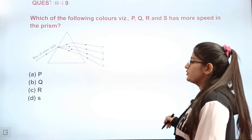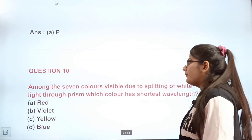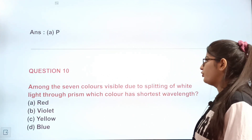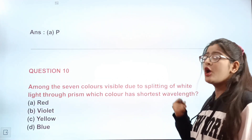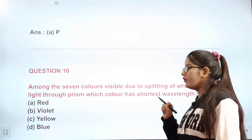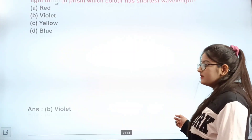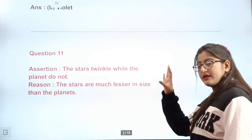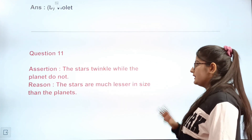Question 10: Among the 7 colors visible due to splitting of white light through a prism, which color has the shortest wavelength? Options are A red, B violet, C yellow, D blue. The correct answer is B — violet.